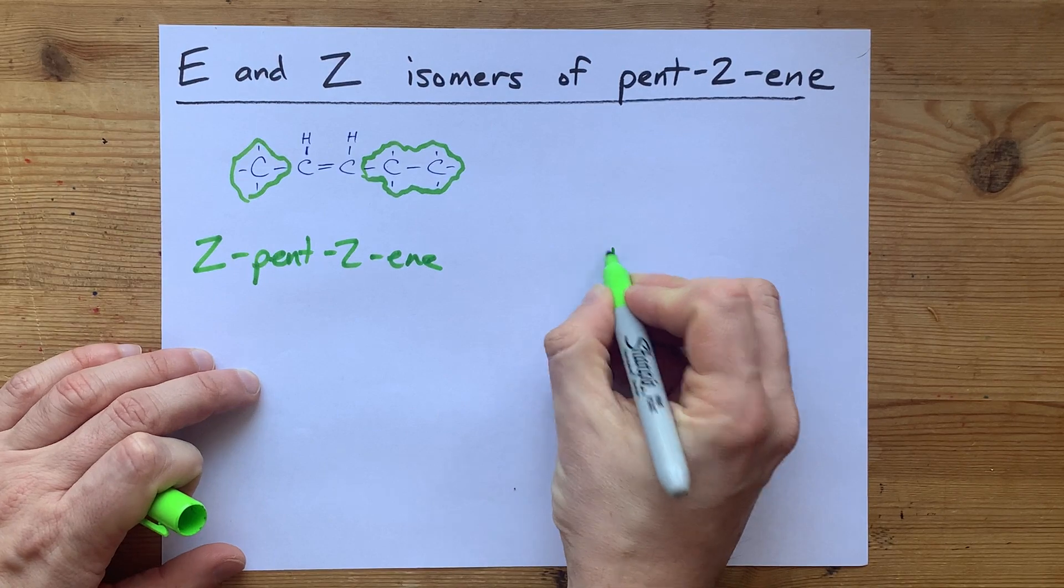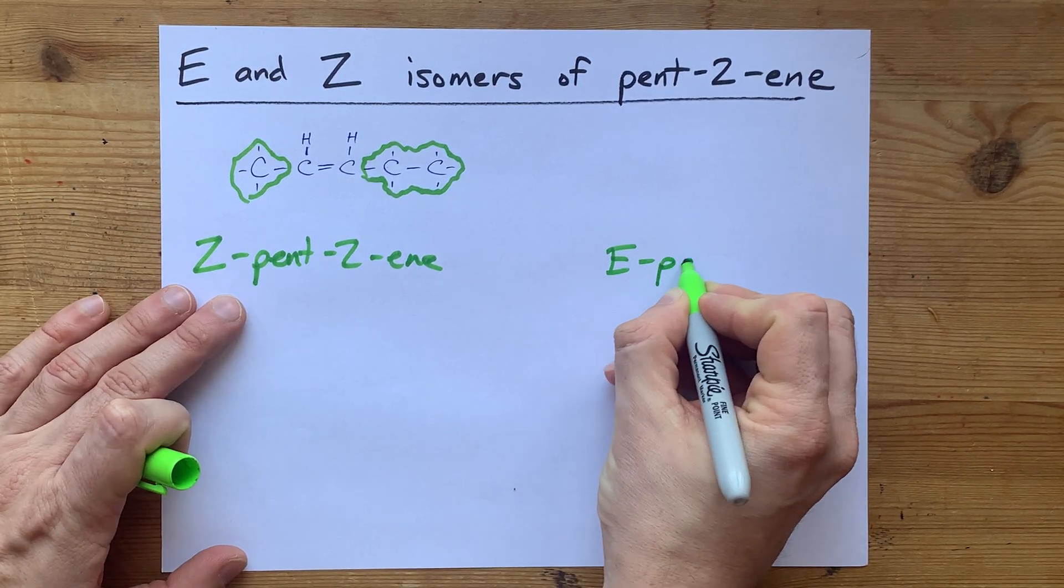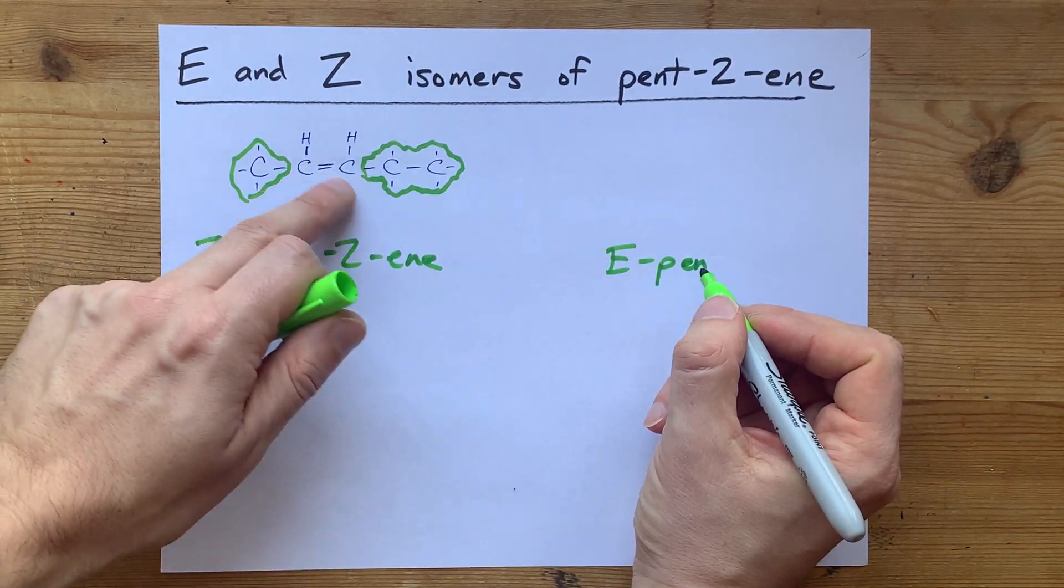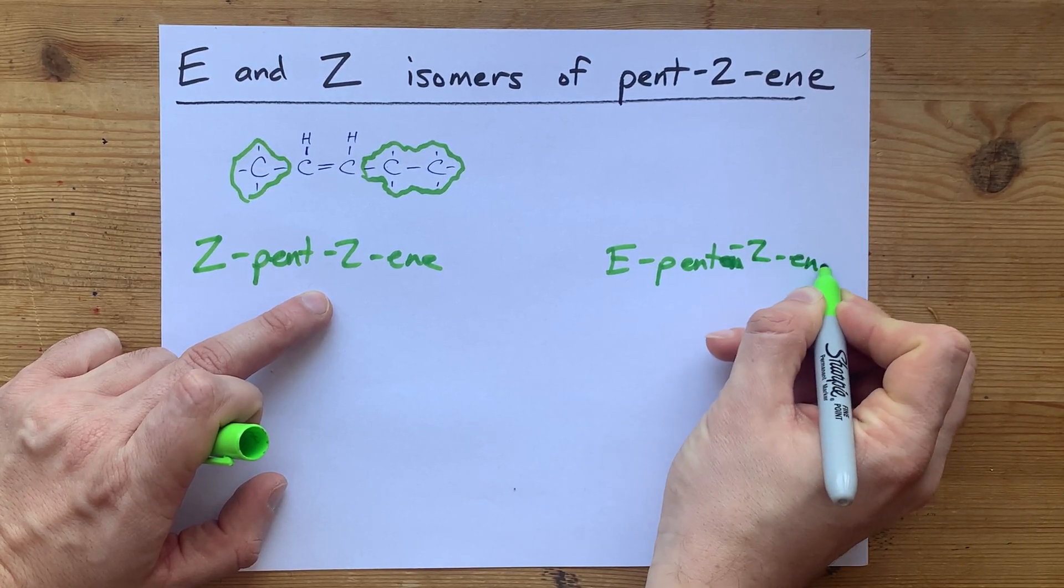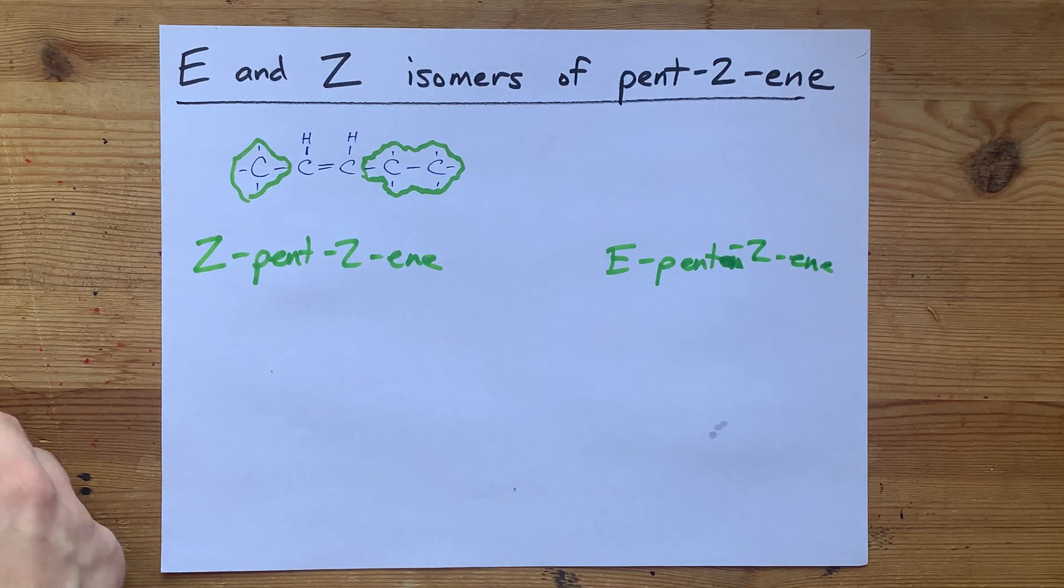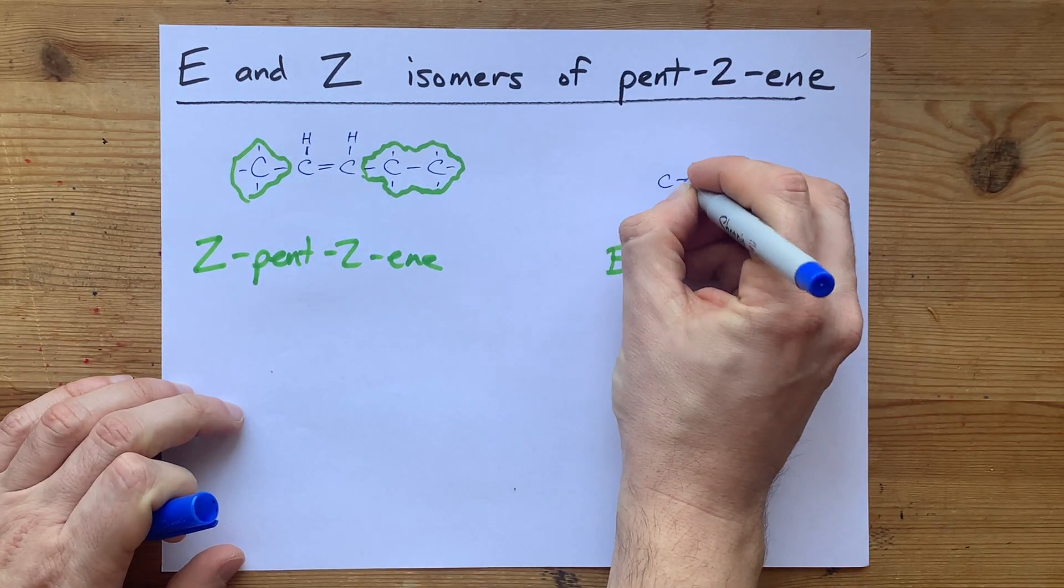Now, I'm going to draw the E isomer, which is the same thing but with the Hs on opposite sides of the double bond, but I'm also going to draw it with the proper bond angles. I'm going to draw my carbon double bond into a carbon.